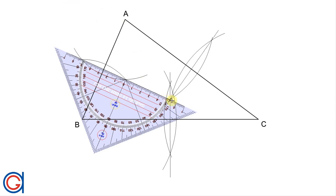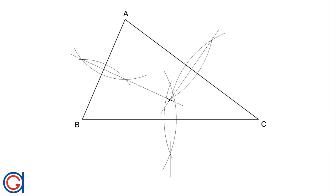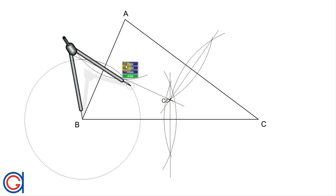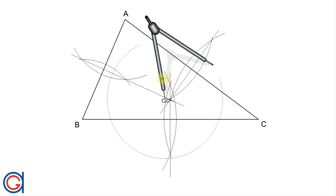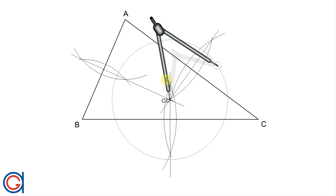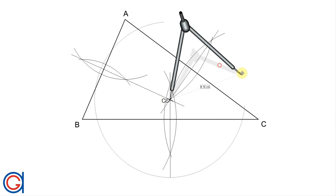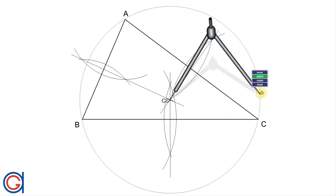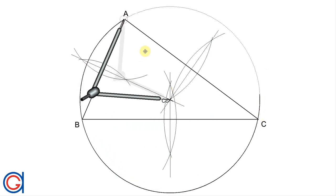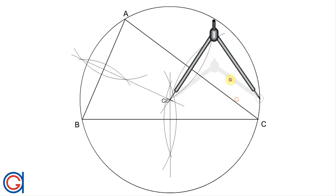So now finally setting our compass on the circumcenter point, which we will call CC as shown here. And with radius CCA or CCB or CCC — it doesn't matter — we are going to draw our circumscribed circle as can be seen here. So if we have been working with accuracy it should cut the three vertices exactly as shown.